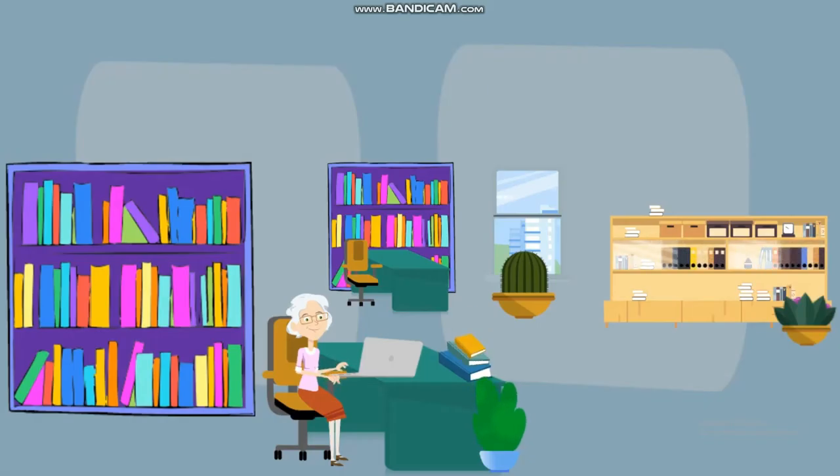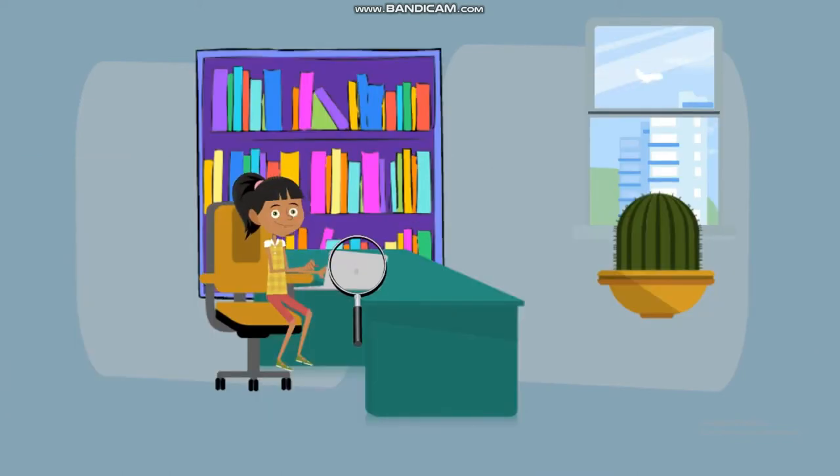In the United States, libraries were the first to install web filters on their publicly accessible computers in response to community pressure. The federal government passed the Children's Internet Protection Act, CIPA, in 2004, requiring all computers in the public library to have web filters if that library accepted federal funds for computers that access the Internet.